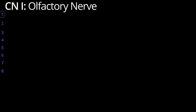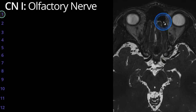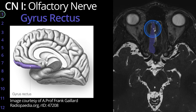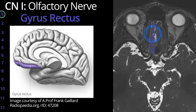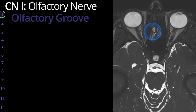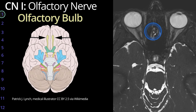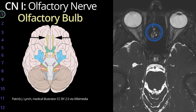We'll start with cranial nerve 1. To see cranial nerve 1, we're going to look into the anterior cranial fossa. Along the anterior medial frontal lobe is what is known as the gyrus rectus. Immediately inferior to that, you have the olfactory groove, and in this olfactory groove lives cranial nerve number 1, the olfactory nerve. Here is the olfactory bulb.